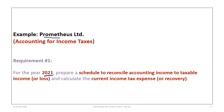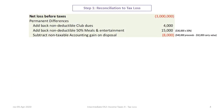This tutorial continues with the Prometheus Limited example, now focused on the year 2021. Our first requirement is to prepare a schedule to reconcile accounting income to taxable income or loss and calculate the current income tax expense or recovery — in this case, a recovery. We always begin with our accounting net income or loss, which from the data is a three million dollar loss.